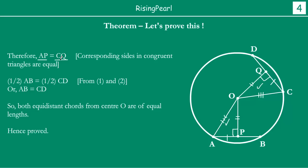Now AP is half of AB and CQ is half of CD, इसका मतलब यह हुआ that half of AB equals half of CD. Eliminating half from both sides, we get AB is equal to CD. So दोस्तों, both equidistant chords from center are of equal lengths — hence the theorem is proved. I hope you have enjoyed and understood the presentation. If you have any questions, go ahead and send us a comment — we'll be happy to provide clarifications. तब तक शुक्रिया, thank you.